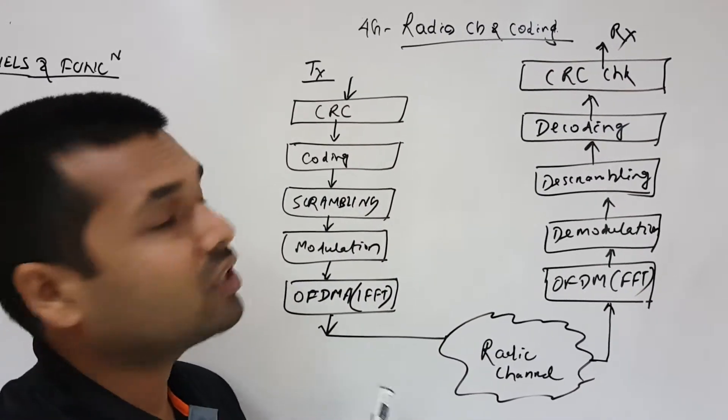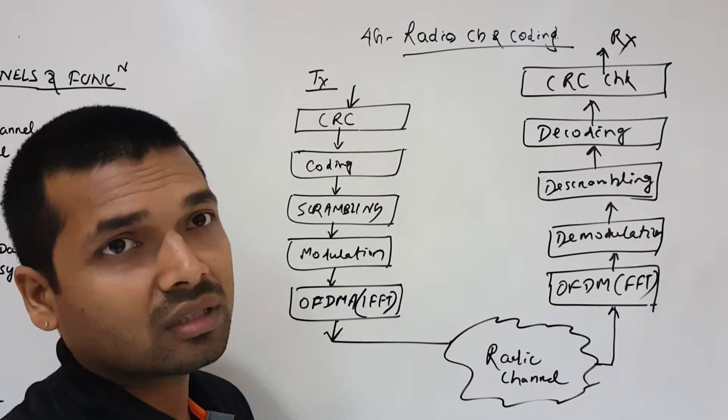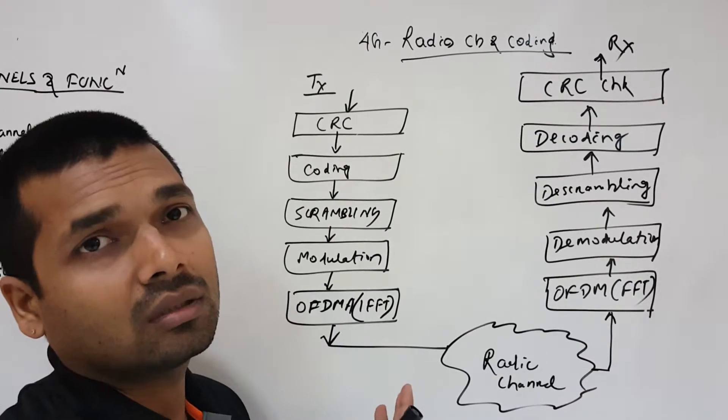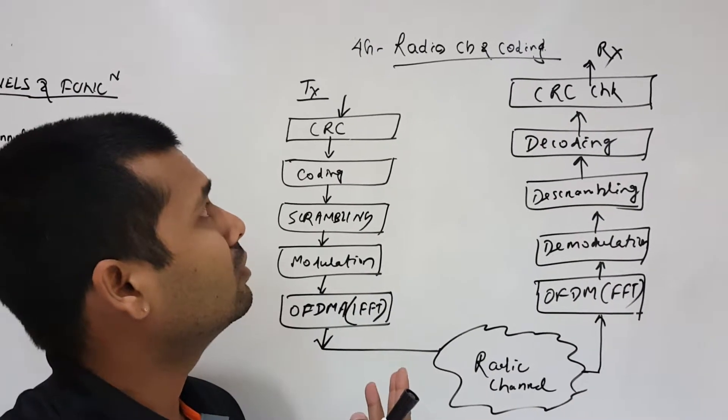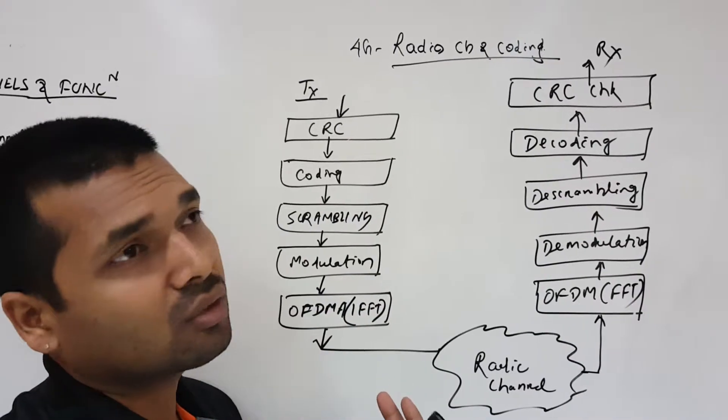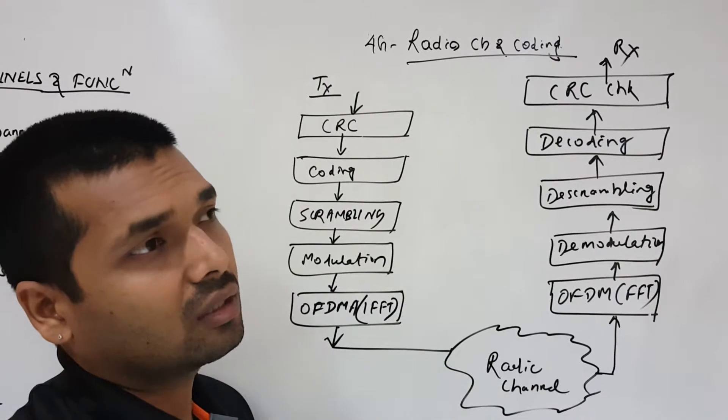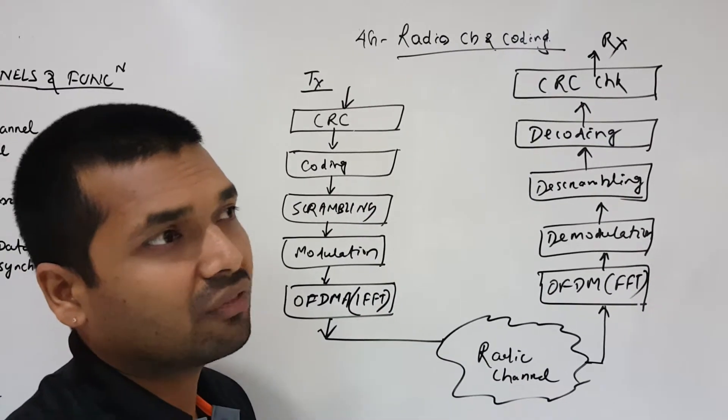First, from the transmitting end before we transmit, we do the CRC. We have a CRC generator where we do channel coding. Before channel coding, we have this cyclic redundancy check. Then we put the input to an FEC generator, forward error correction.